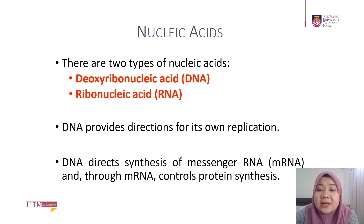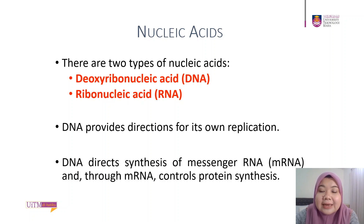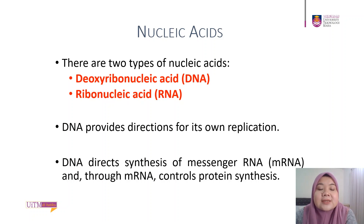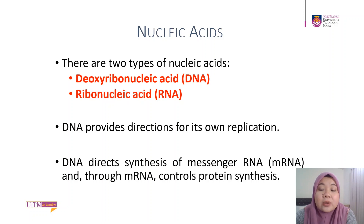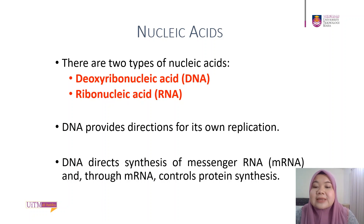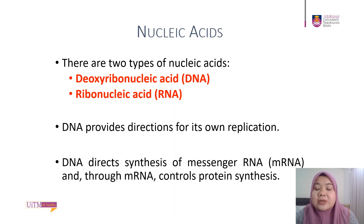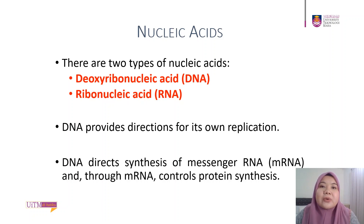There are two types of nucleic acids: deoxyribonucleic acid or DNA, and ribonucleic acid or RNA. DNA provides direction for its own replication and also directs the synthesis of messenger RNA or mRNA. Through mRNA, it controls protein synthesis. Basically, your DNA stores your genetic information, and this genetic information is translated into proteins that make our body function.